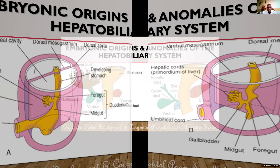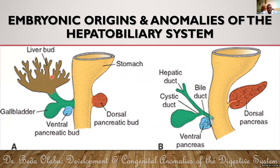The pars hepatica gives rise to the liver cords, and the pars cystica gives rise to the gallbladder. As development continues, the common stem of the hepatic diverticulum becomes the common bile duct. The stem of the pars cystica becomes the gallbladder as well as the cystic duct. The stem of the pars hepatica becomes the common hepatic duct and the right and left hepatic ducts.